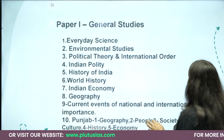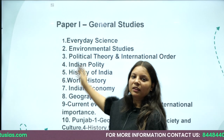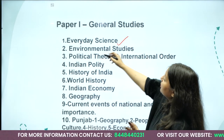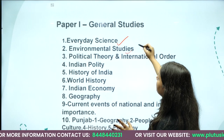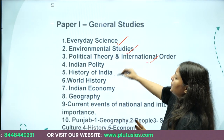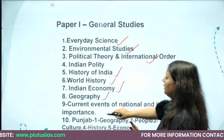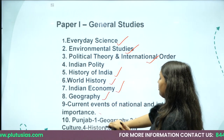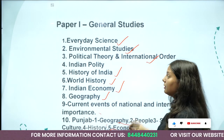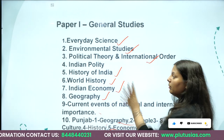In both papers the total marks are 200. The GS paper covers topics such as History of India, World History, Indian Economy, Geography, Punjab Geography, Punjab History, and Geography — all questions come from these topics.